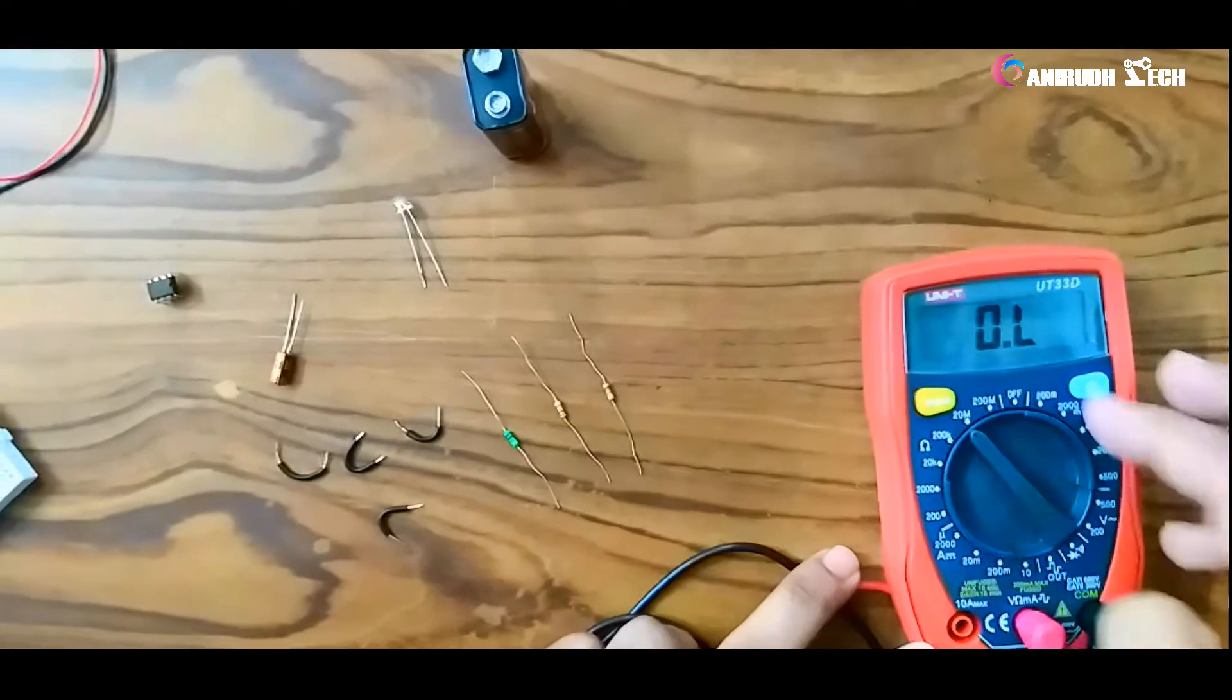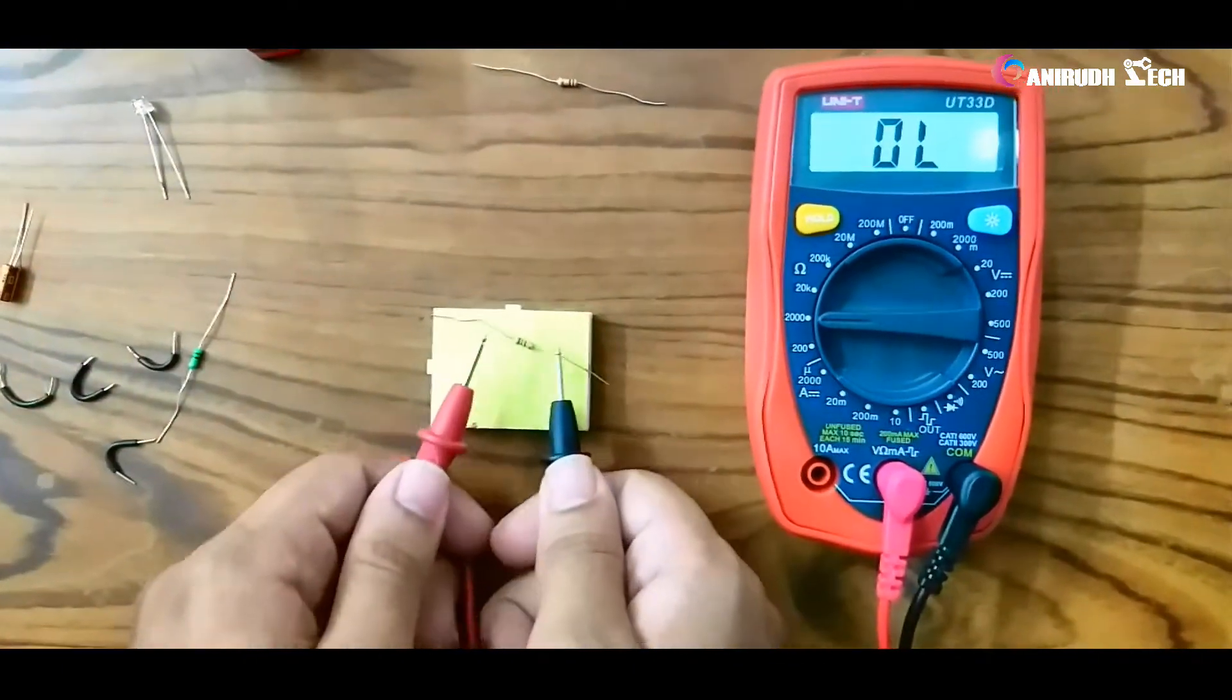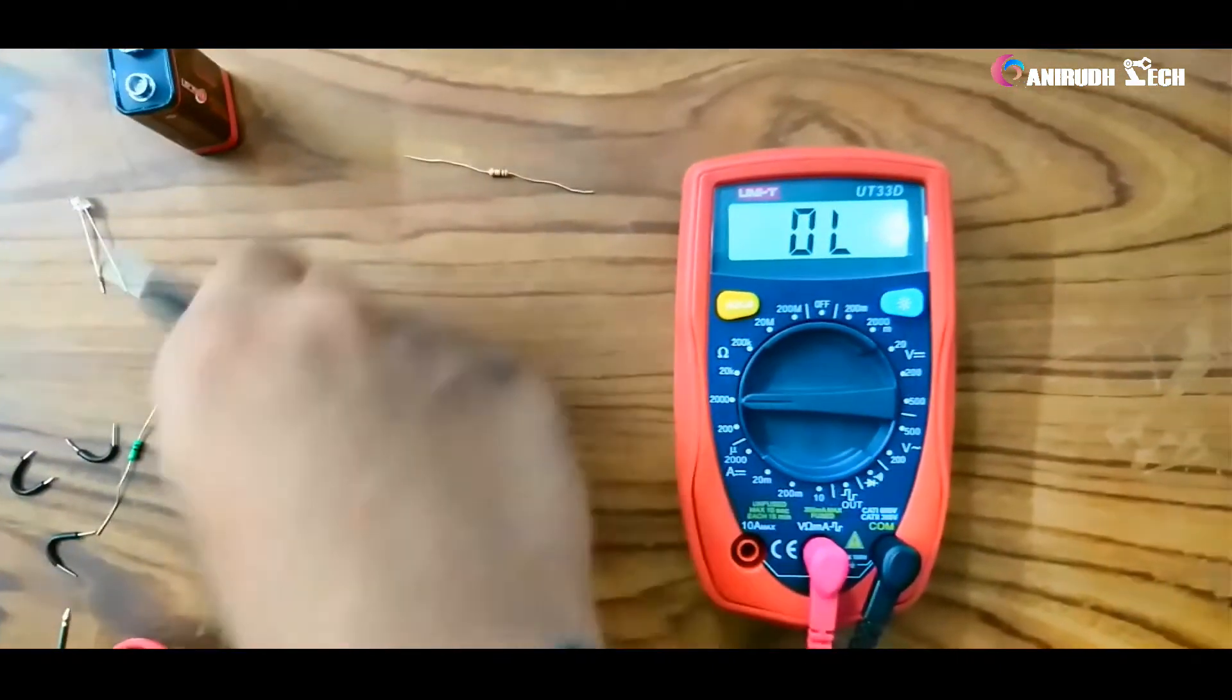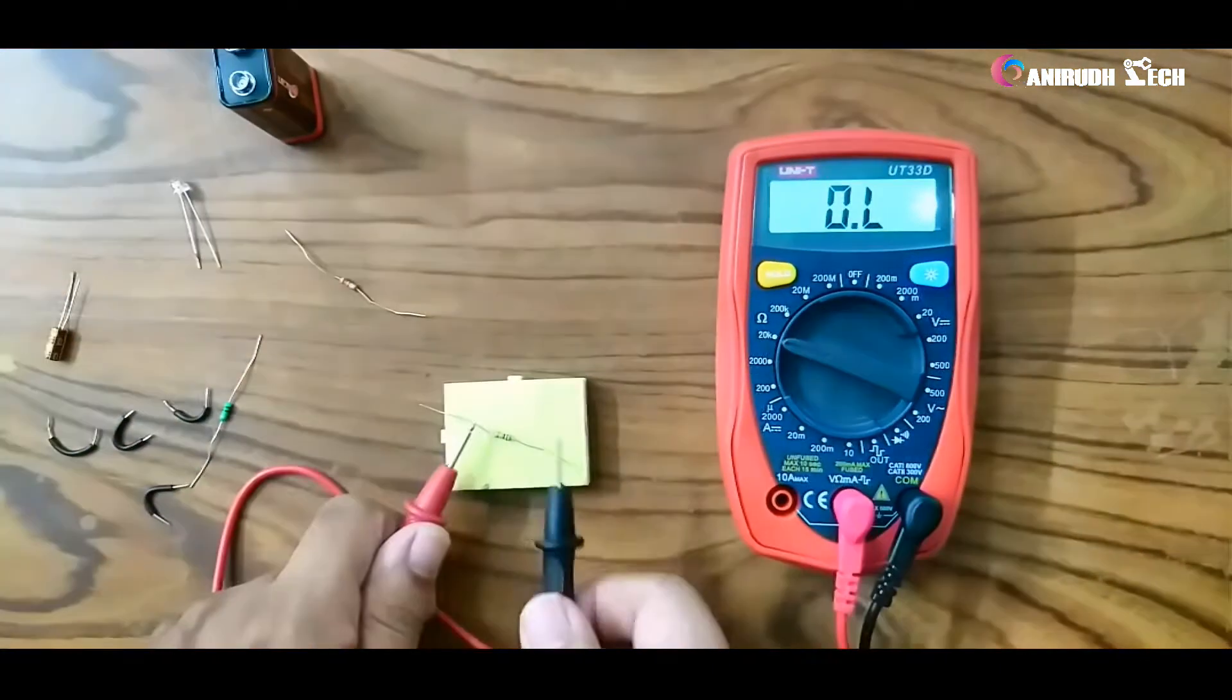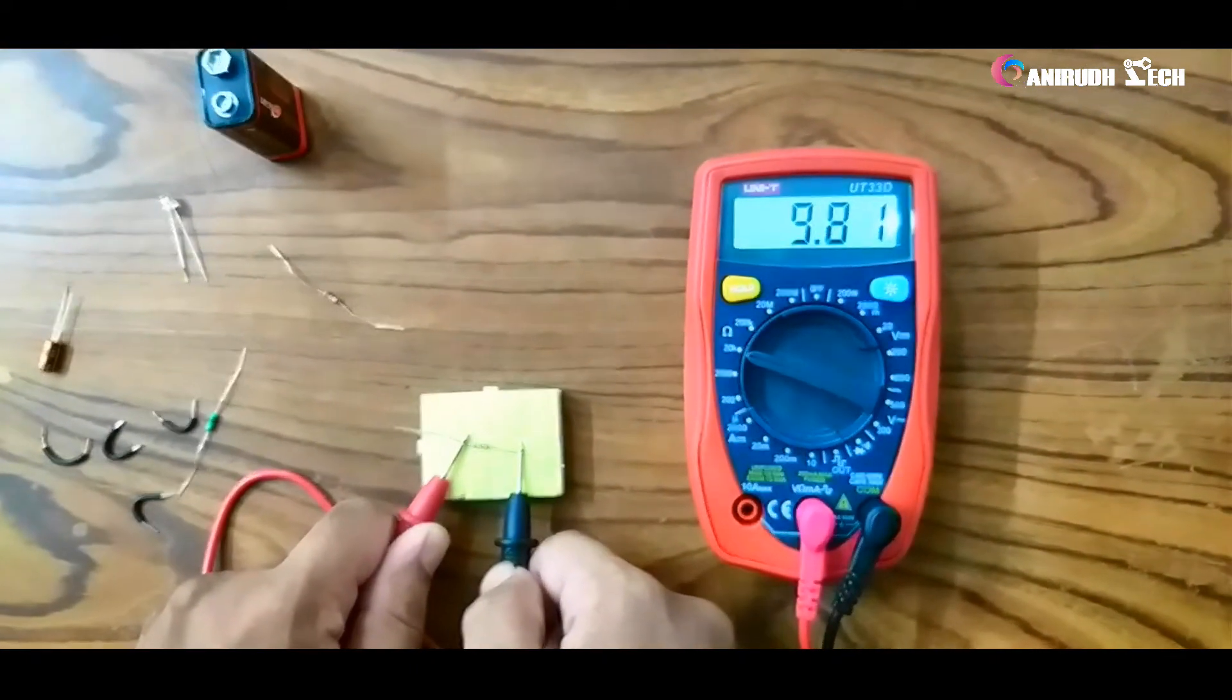Resistor values: for our LED, we are using a 220 ohm resistor, and a 10 kilohm resistor.